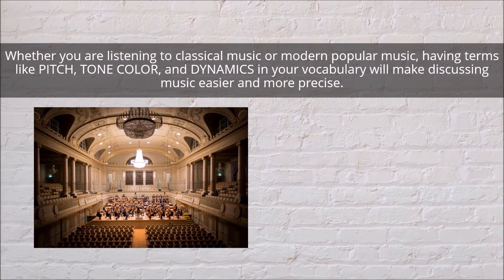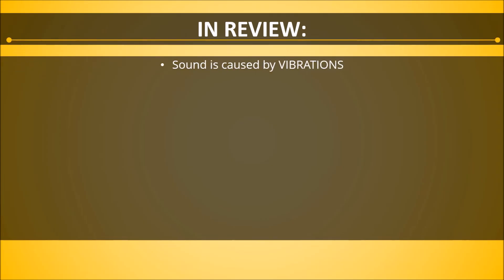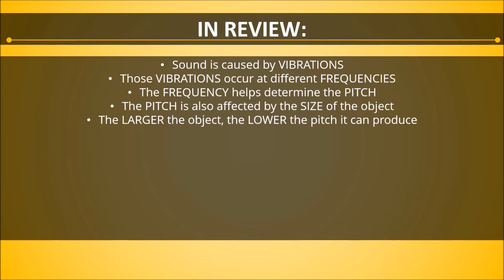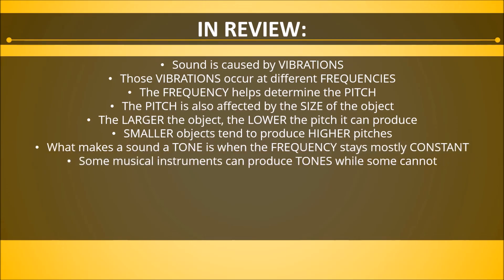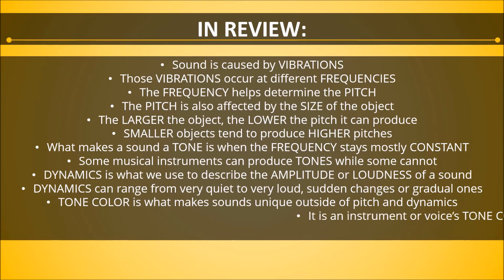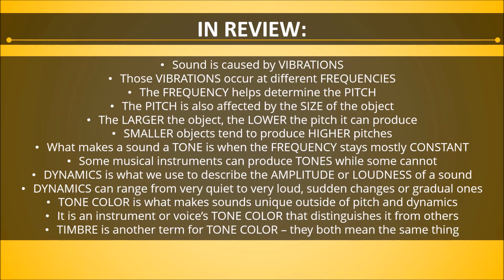Whether you are listening to classical music or modern popular music, having terms like pitch, tone color, and dynamics in your vocabulary will make discussing music easier and more precise. To quickly review: sound is caused by vibrations, which occur at different frequencies. Frequency helps determine pitch, which is also affected by the size of the object — larger objects produce lower pitches, smaller objects tend to produce higher pitches. What makes a sound a tone is when the frequency stays mostly constant. Dynamics describes the amplitude or loudness of a sound and can range from very quiet to very loud, with sudden or gradual changes. Tone color, also called timbre, is what makes sounds unique outside of pitch and dynamics, and is what distinguishes one instrument or voice from another.